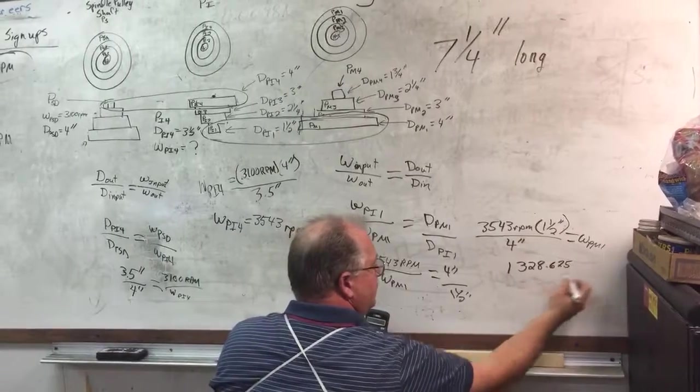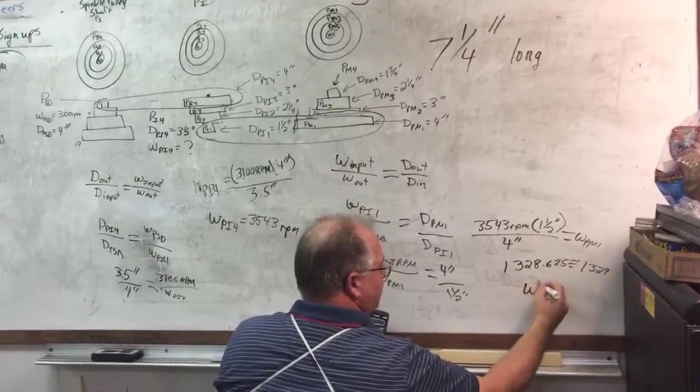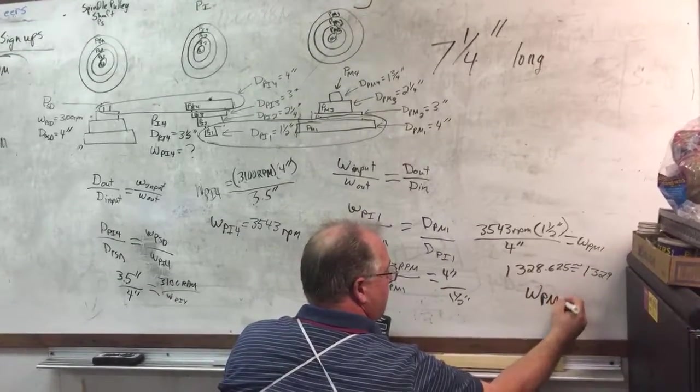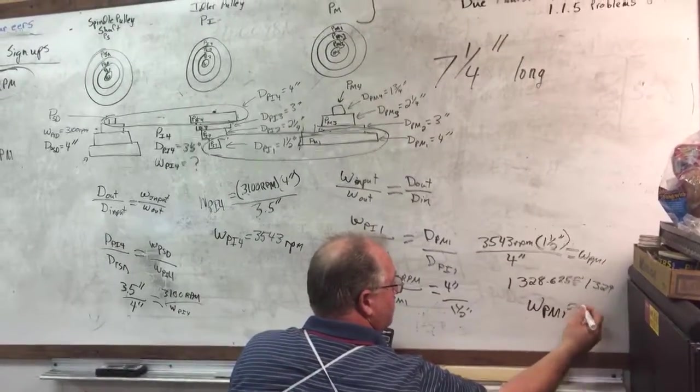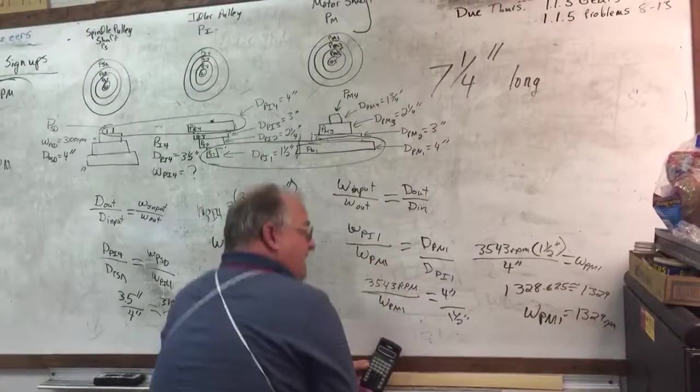We can just say that that is similar to 1,329. So my W of PM1 equals 1,329 RPM.